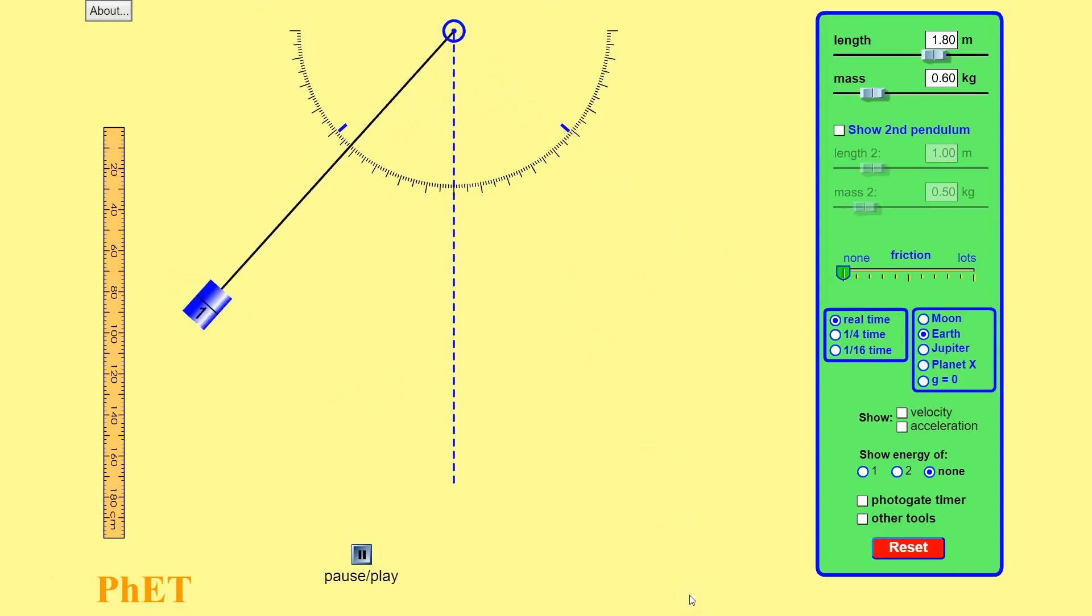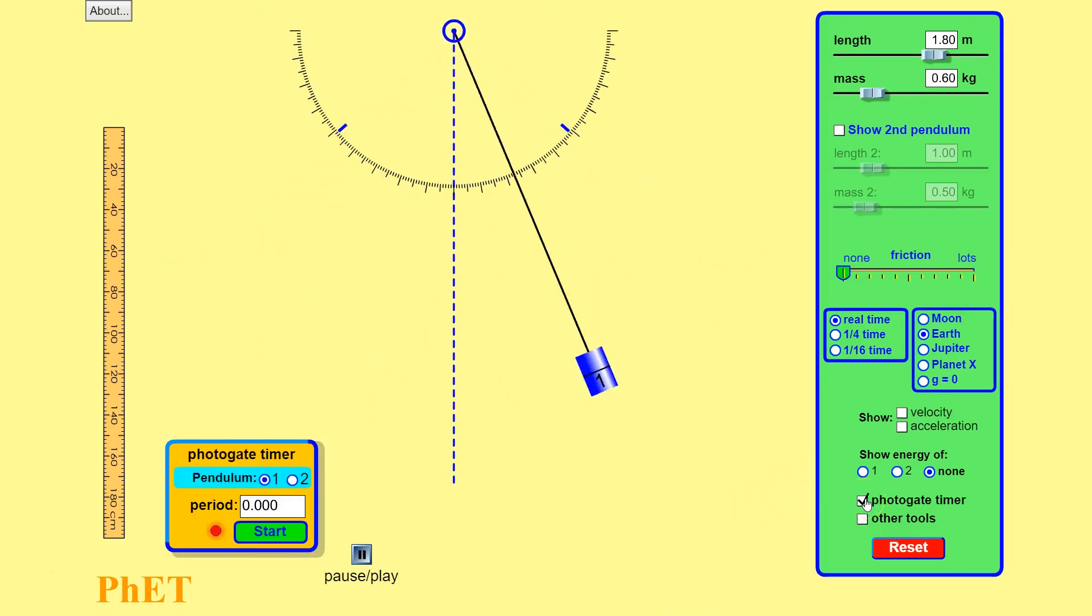To measure our dependent variable, the period, you need to select the photogate timer. Once the photogate timer is going and the pendulum is swinging, you just need to hit start. It does not matter where your pendulum is located at the time. It will collect data on one full period.